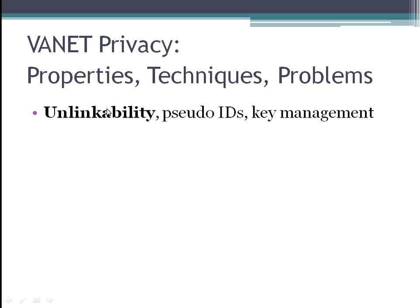Number one: unlinkability. Unlinkability means you can't track a person to their real identity. The way this has been addressed in the literature is to use pseudo-identifiers. Each car will have hundreds of thousands of pseudo-identifiers over its lifetime, each one valid for probably five minutes. The problem is key management — how do you load up all those keys into the vehicle and keep track of which ones are which?